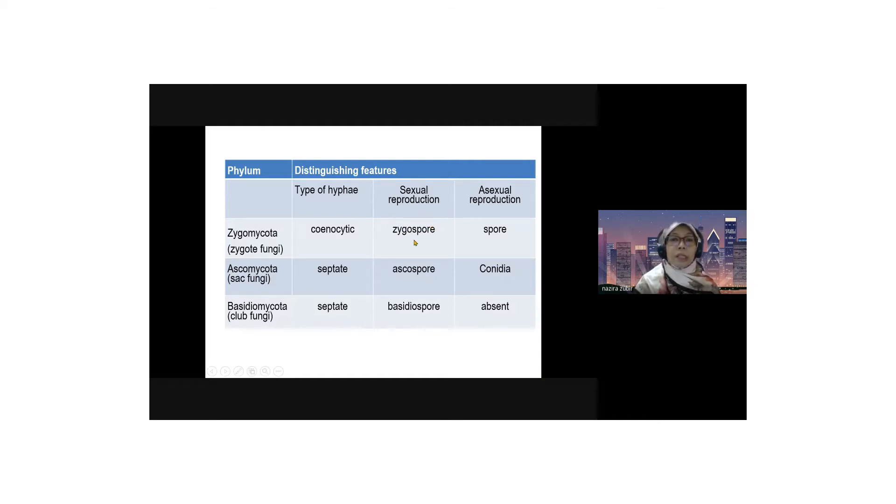For sexual reproduction is zygospore, but the name of the spore for asexual reproduction just spore, okay, that is for Zygomycota. And then the second phylum is Ascomycota, so the organisms under phylum Ascomycota is known as ascomycetes, it's a sac-like fungi.